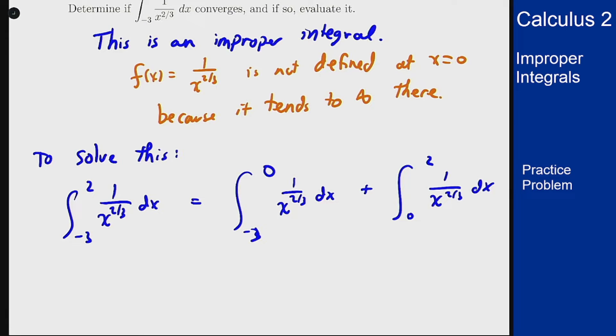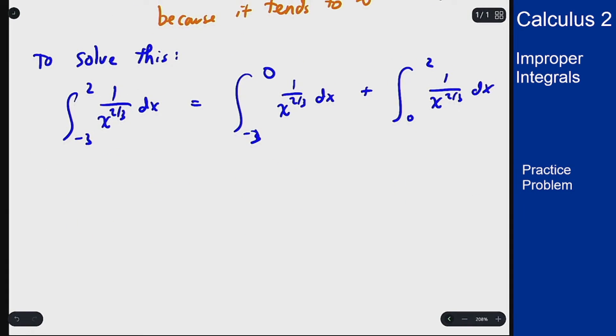Now we have to handle each of these separately and independently as improper integrals to which we have the answer. For the first of these we evaluate this integral as the limit as r goes to 0 from the left staying away from 0 on the side that our interval is minus 3 up to r of 1 over x to 2 thirds dx.